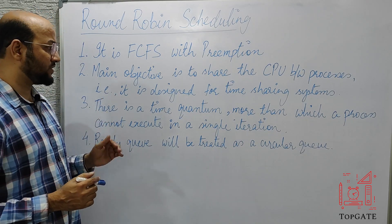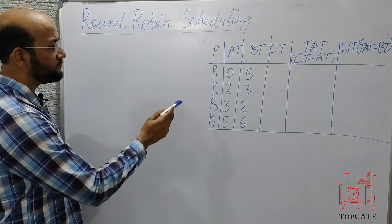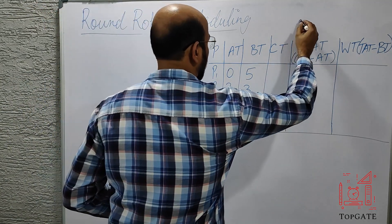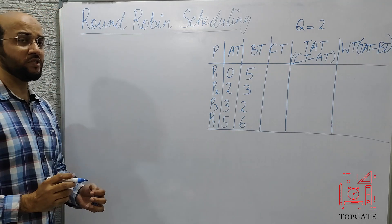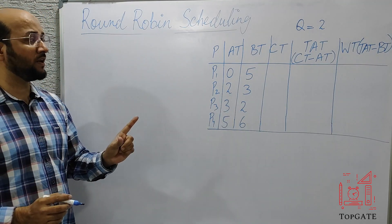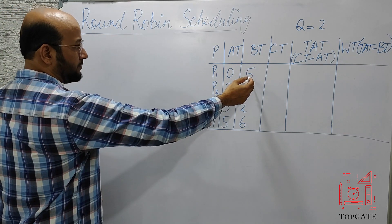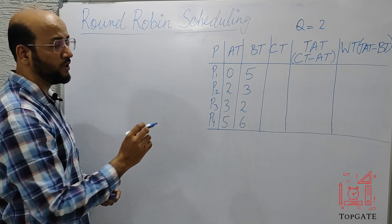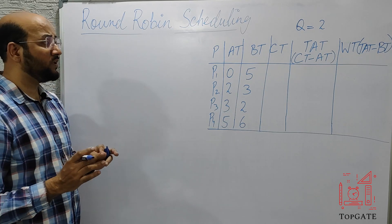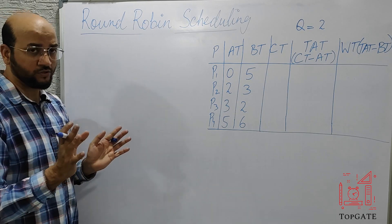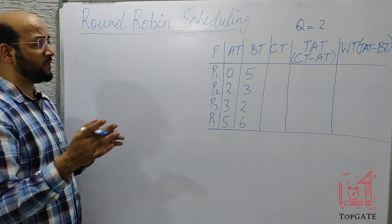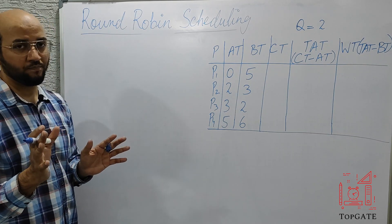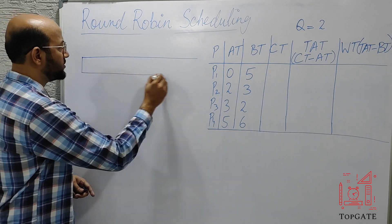Now let's look at an example. We have four processes P1 to P4 with given arrival times and burst times, and a time quantum of 2. Process P1 has a burst time of 5, but in a single iteration it can only execute 2 time units. In Round Robin, we will construct a ready queue first, then build the Gantt chart using it.